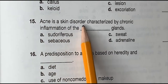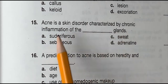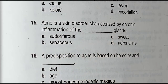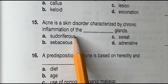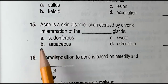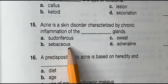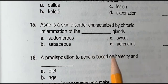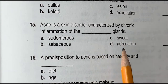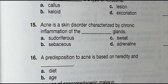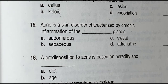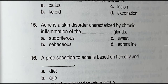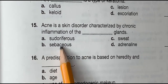Question 15: Acne is a skin disorder characterized by chronic inflammation of the blank glands. Is it A, superficial. B, sebaceous. C, sweat. Or D, adrenal. And the correct answer is B, sebaceous.